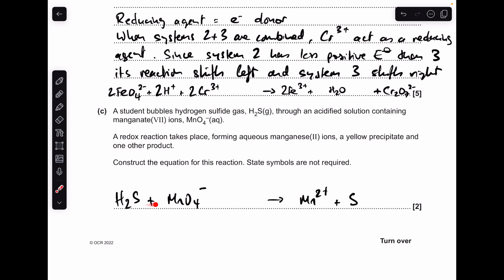Part C - I've sort of put up what we know so far from the information. A student bubbles hydrogen sulfide gas through an acidified solution containing manganate(VII) ions. That forms Mn^2+ ions, a yellow precipitate which is sulfur the element, and one other product.